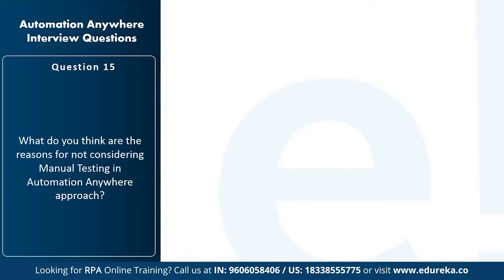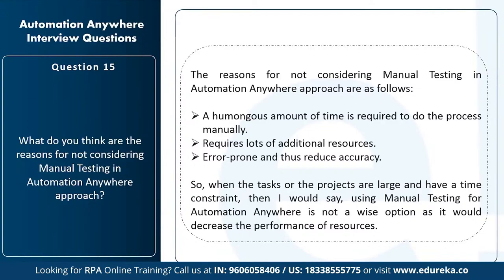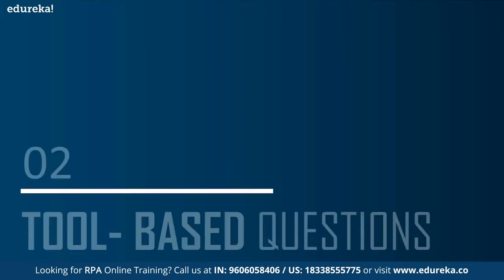The next question is: what are the reasons for not considering manual testing in an Automation Anywhere approach? The reasons are: a humongous amount of time is required to do the process manually, it requires many additional processes, and the processes can be error-prone and reduce accuracy. When tasks or projects are large with a time constraint, manual testing decreases resource performance and reduces accuracy. With that, we come to the end of the basic interview questions section. Now moving on to the tool-based questions.